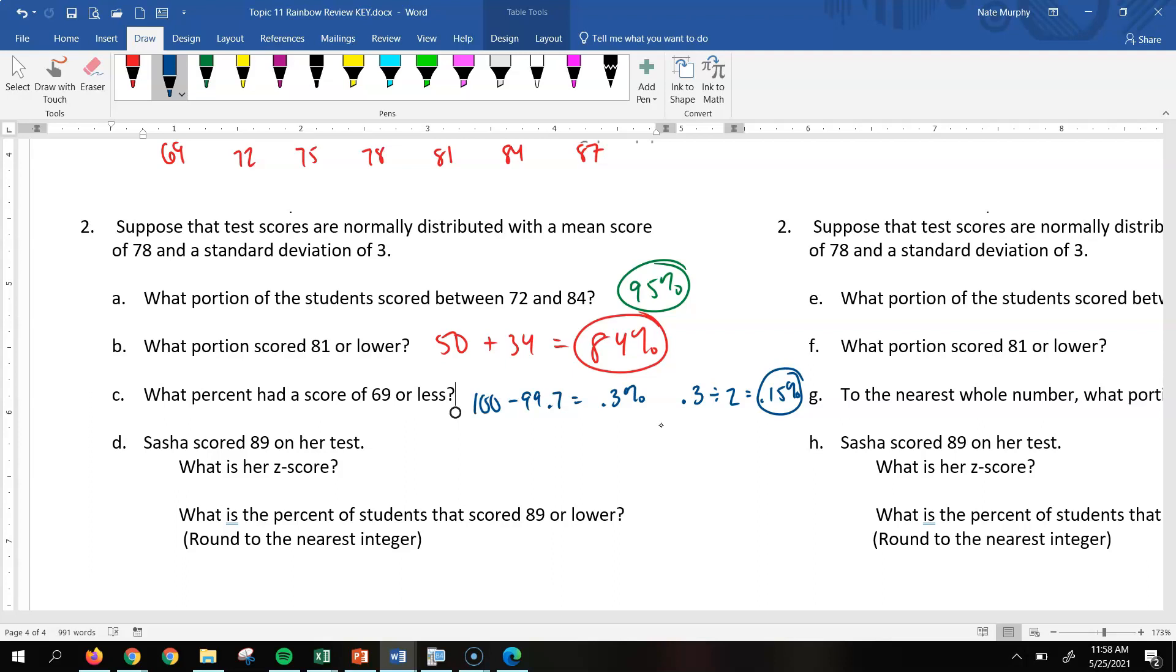So to get part D, we're going to have to find the Z-score. So to find the Z-score, remember that we would take her score, which is an 89, minus the mean, which is a 78, and divide by the standard deviation, which is 3. And when you do that, you get 3.67, not a percent, 3.67 would be her Z-score.